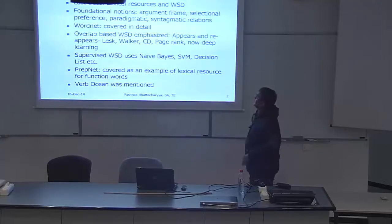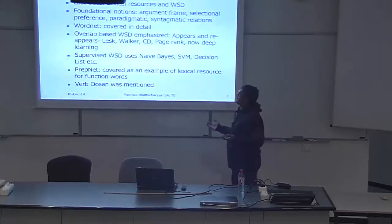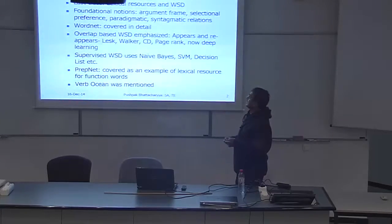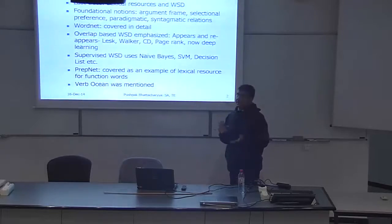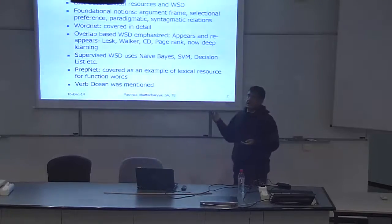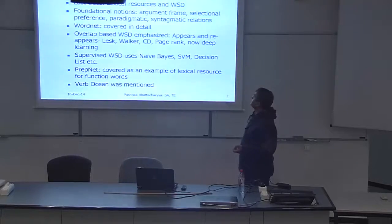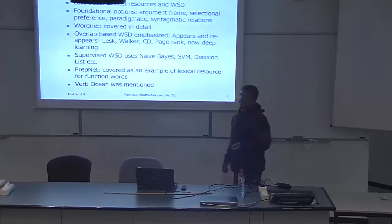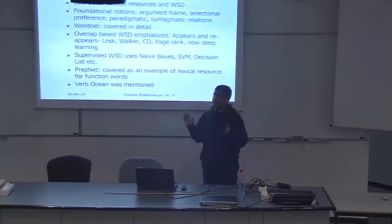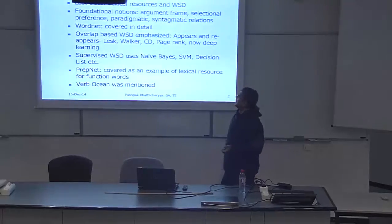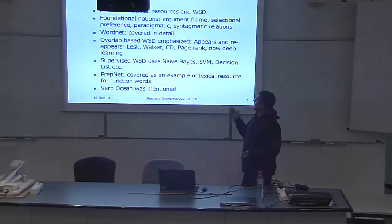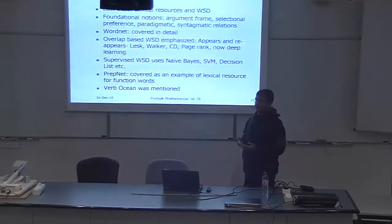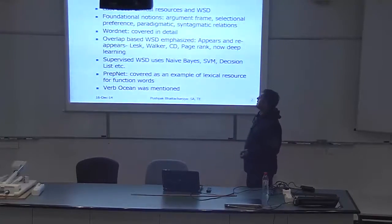In the previous lecture, we mainly covered foundational notions like argument frame, selectional preference, and paradigmatic and syntagmatic relations. Paradigmatic relations come from properties of words — for example, dog is a kind of animal, which is a hypernymy relationship. Syntagmatic relationships come from co-occurrence: if two words appear in the same corpus, sentence, or paragraph, they have a syntagmatic relationship — for example, dog and bark.